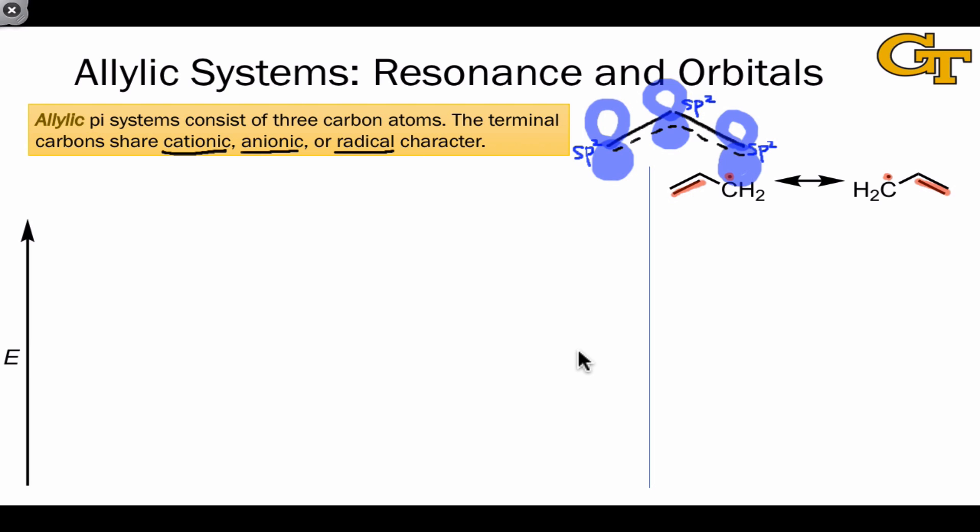Because the allyl radical is a three-atom pi system, it has three pi molecular orbitals. The lowest energy pi MO, let's call it pi 1, is filled. The next one up, pi 2, is half filled. This is where the radical electron is located. And the highest energy orbital, pi 3, is empty. If we look at the orbital shapes, we see a familiar pattern emerging. The lowest energy orbital is constructed from three in-phase p orbitals, overlapping constructively, as we see here.